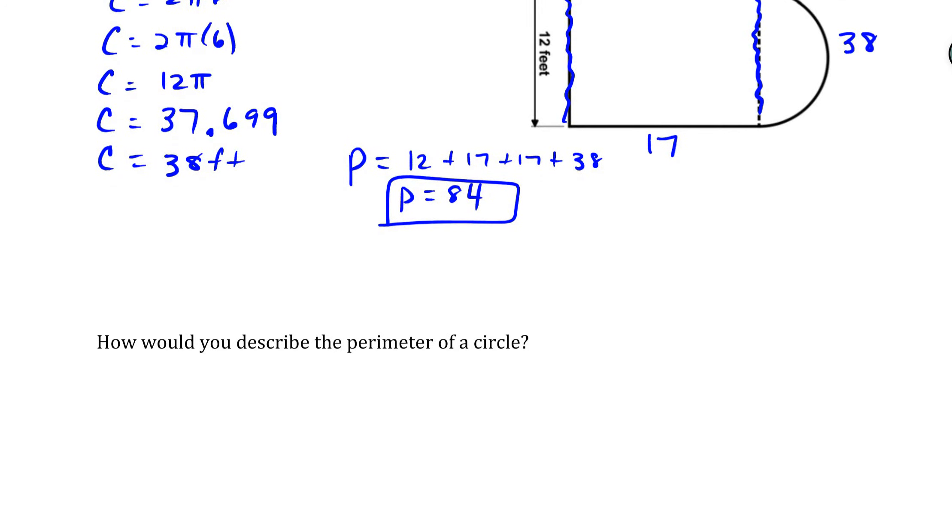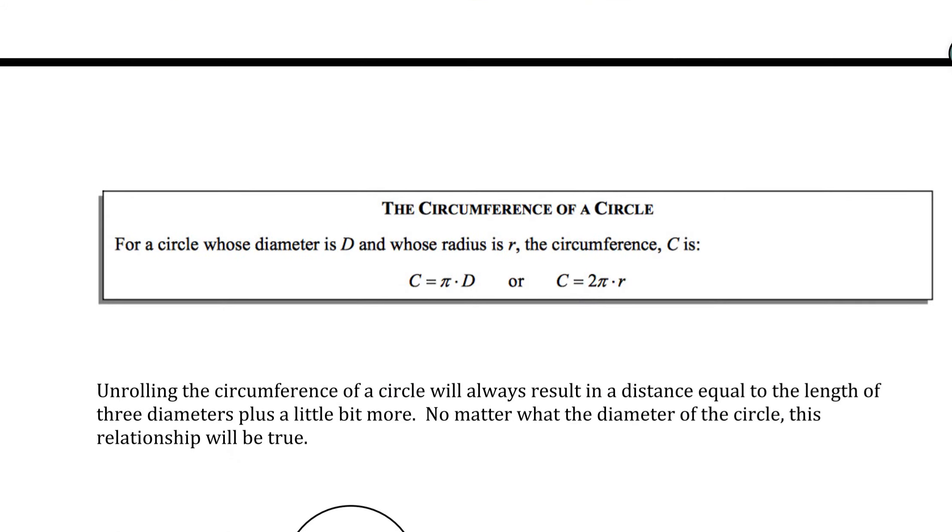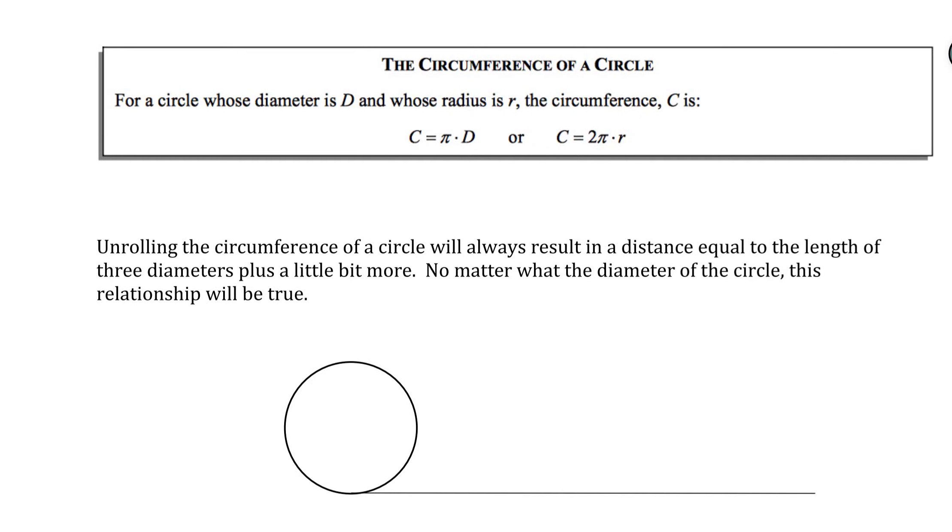That then says, how would you describe the perimeter of a circle? We would say that is going to be the circumference. So the circumference of a circle. For a circle whose diameter is d and whose radius is r, the circumference c is c equals πd or c equals 2πr. Personally, I like this version of the formula better, only because the area formula requires us to know the radius, so we might as well use the radius in the circumference formula too.